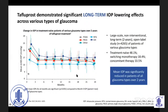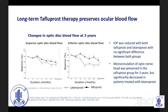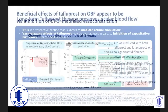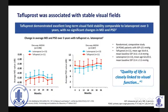Tafluprost is a drug I have come across recently that has demonstrated significant long-term IOP-lowering effects across various types of glaucomas, with mean IOP significantly reduced over a 24-month period. Studies have also shown that Tafluprost may improve and preserve ocular blood flow. It is supposed to inhibit ET-1 mediated vasoconstriction, thereby improving ocular perfusion compared to latanoprost, which does not do so. Tafluprost has also shown excellent long-term visual field stability compared to latanoprost over three years, with no significant changes and stable visual fields in a significant number of patients.